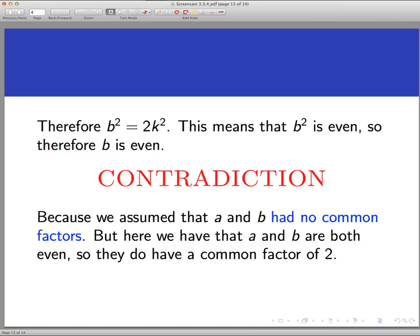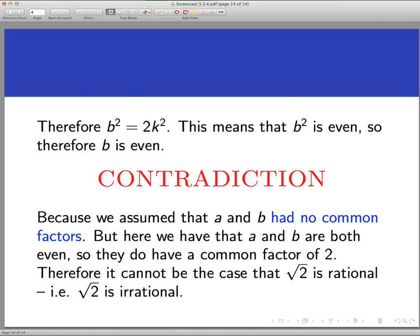This contradiction forces us to reject the assumption that led us here in the first place. And that assumption is that the square root of 2 is a rational number. Since square root of 2 can't be rational, because it leads us to this contradiction, it must be irrational. And that is the end of the proof. With a little tweaking and some help from the proof techniques coming up in the next section, we can actually prove that the square root of any prime number is irrational. And that also uses contradiction.